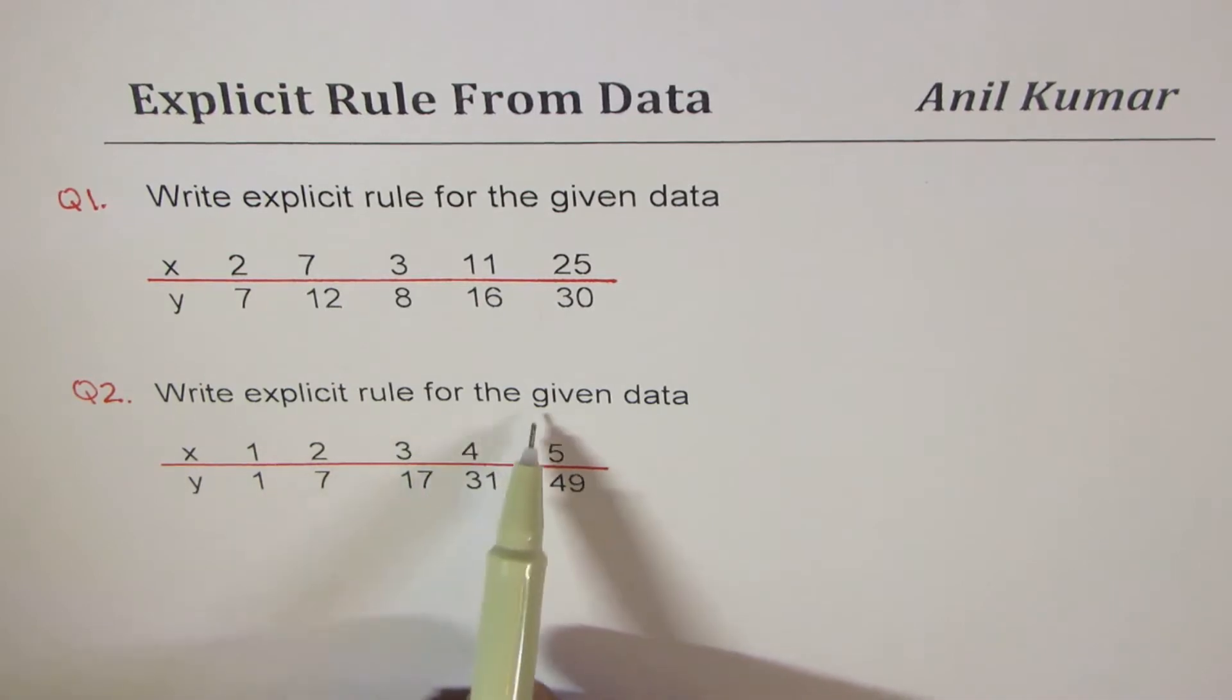In question number two, it is a similar question. We have to write explicit rule for the given data. The data is for x values of 1, 2, 3, 4, and 5.